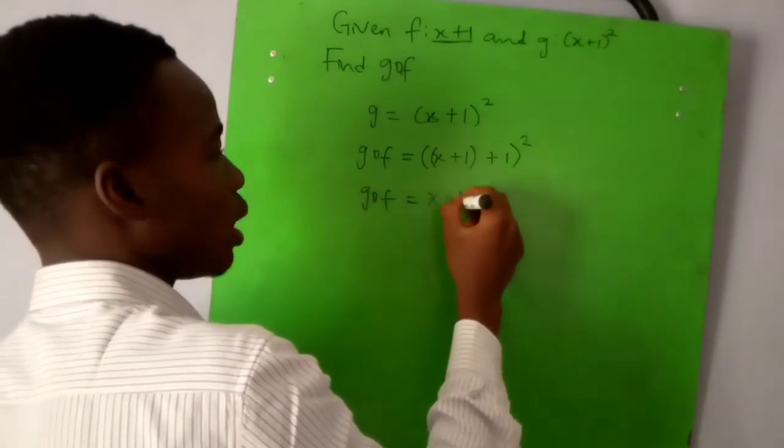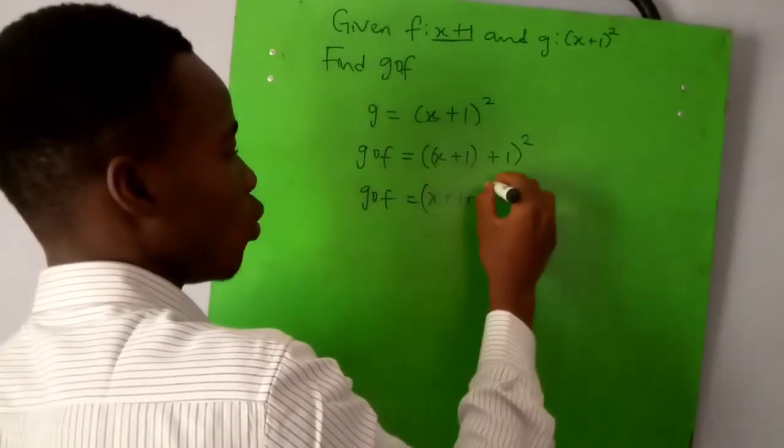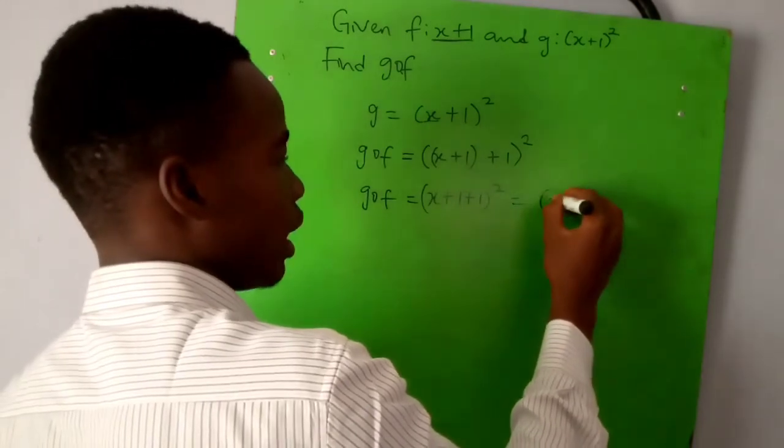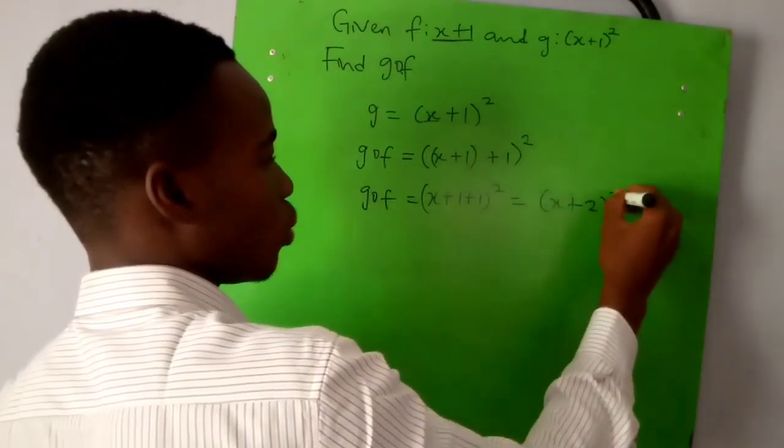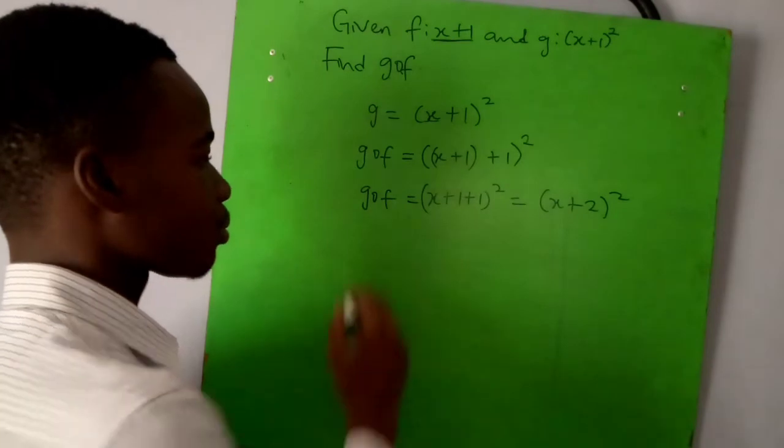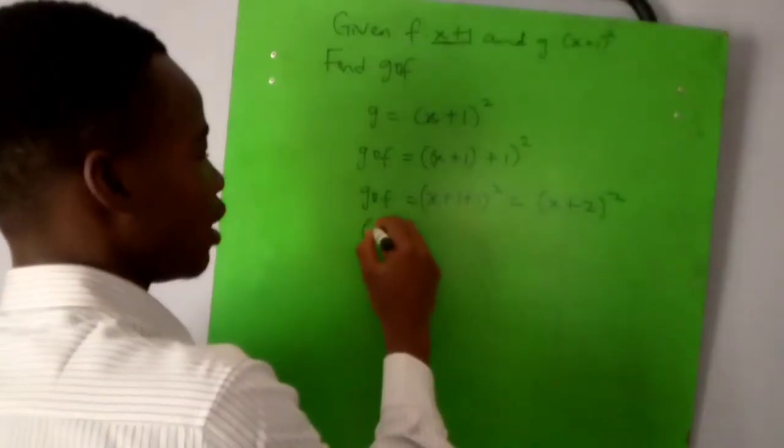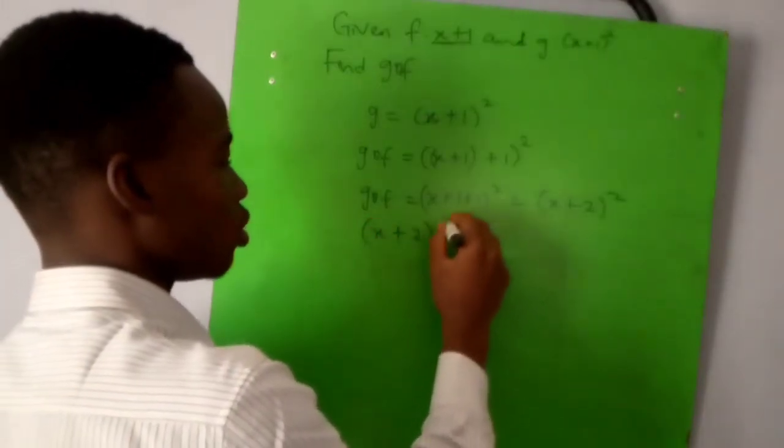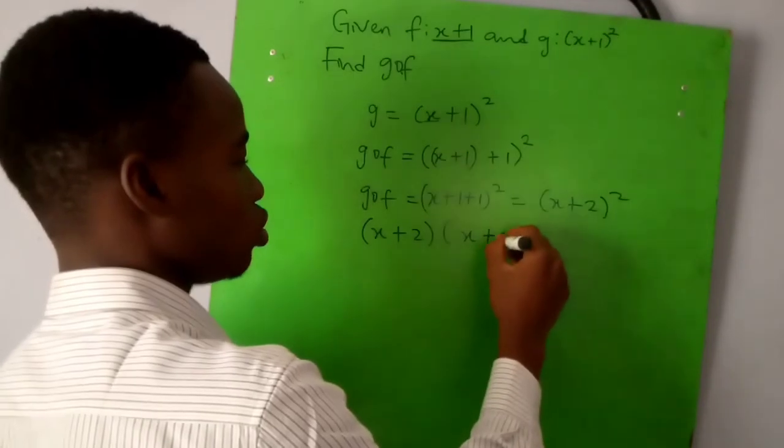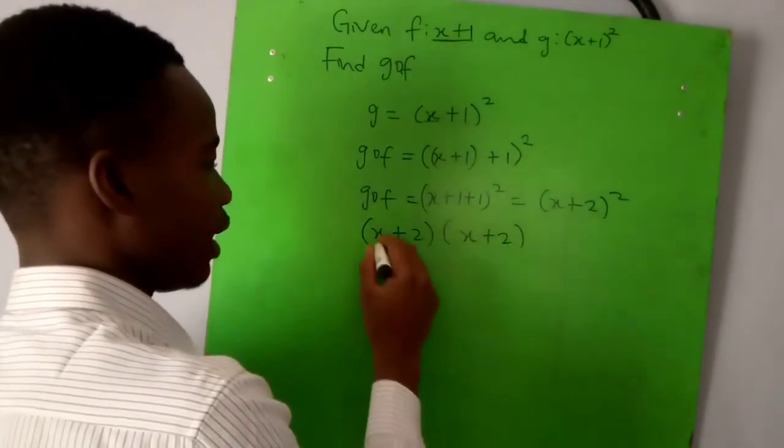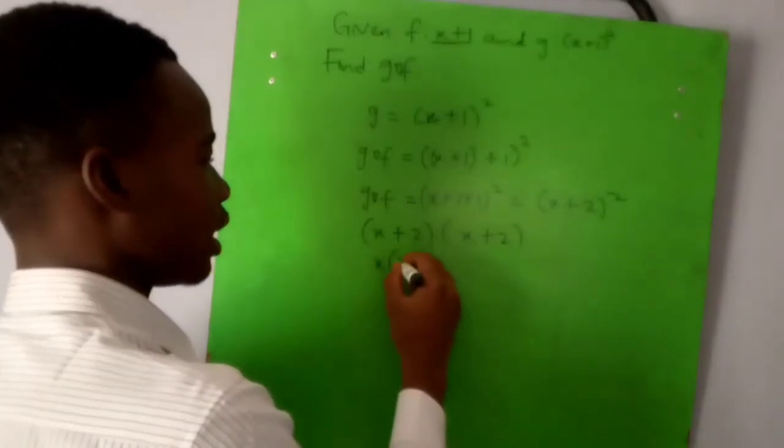Now I'm breaking this down. We have (x+2)(x+2). We now have x multiply everything here: x+2, plus two multiply everything here: x+2. So we open the brackets. X times x is x^2.